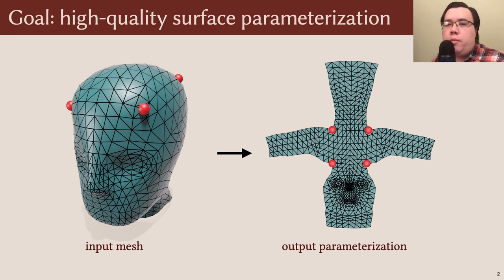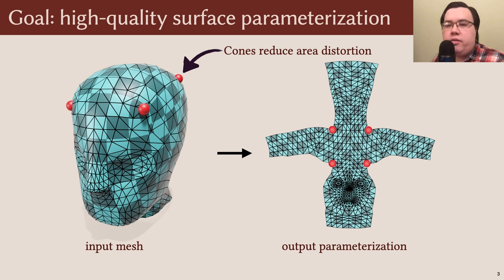The use of a conformal map reduces angle distortion and careful cone placement reduces area distortion. After obtaining this parameterization, we can interpolate a texture across the original mesh.